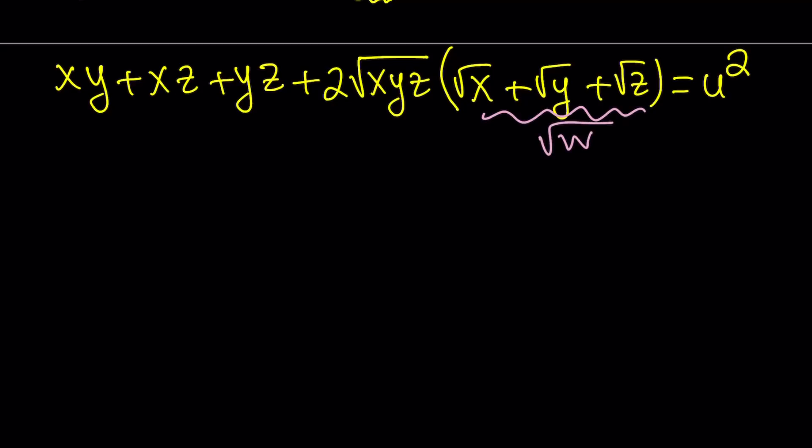But when you multiply these two radicals, that's going to make a nicer radical. Let's go ahead and proceed and see what we get from here. This gives us xy plus xz plus yz plus two times square root of xyzw. We can combine them all. Equals u squared.